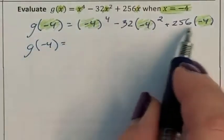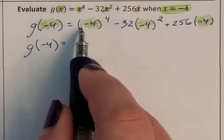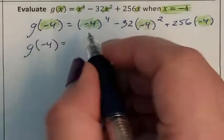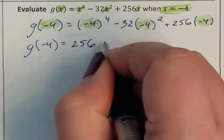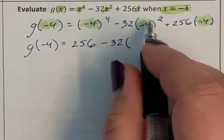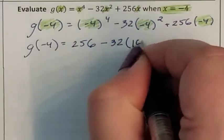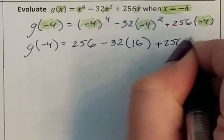First thing I need to do is exponents. The entire quantity of negative 4, which means I need to make sure I put the entire parentheses around it, this is 256, minus 32, the entire quantity of negative 4, meaning the parentheses need to be all around it. Raised to the second power is 16. That was our last exponent.